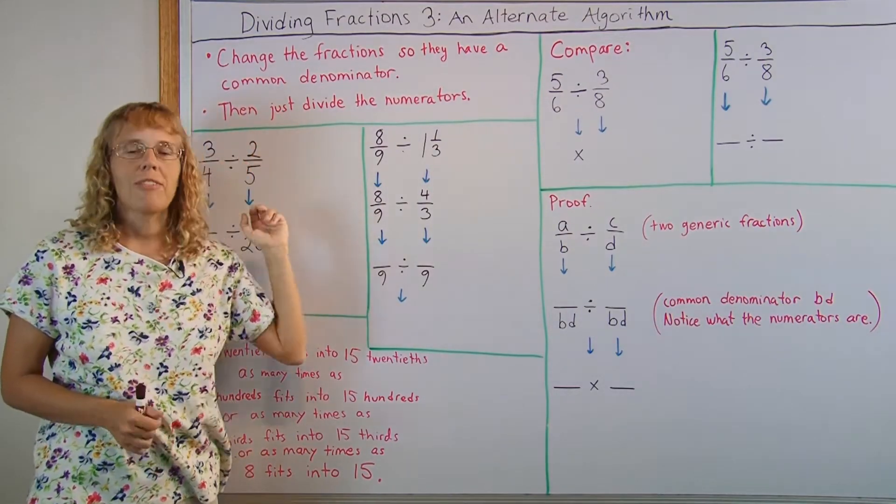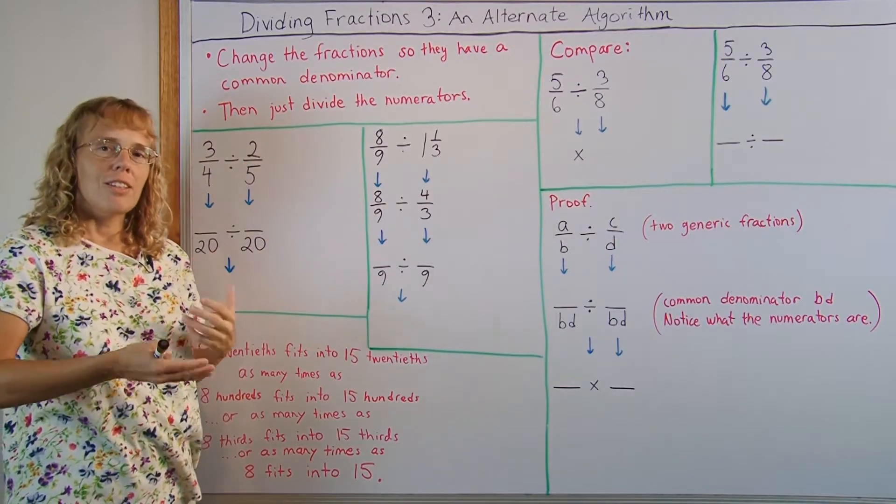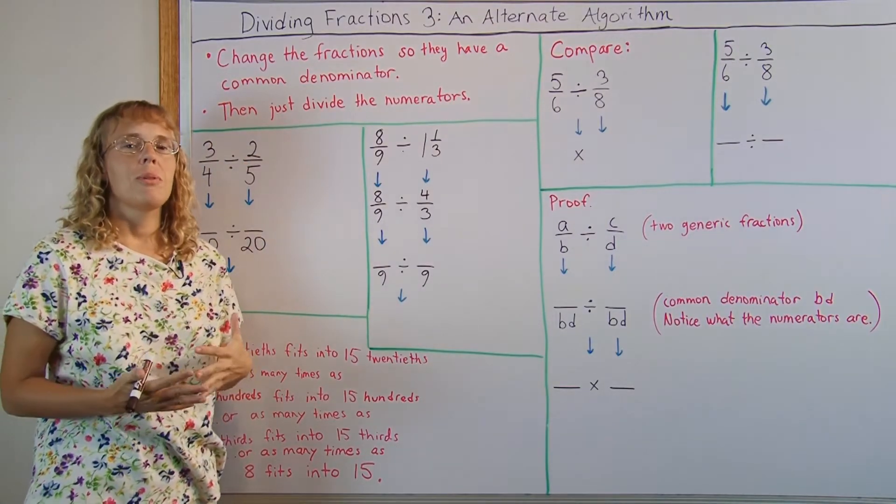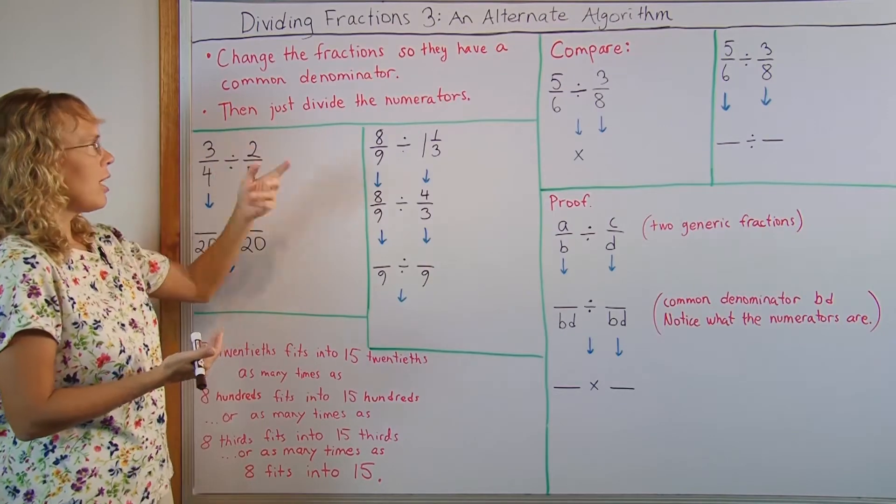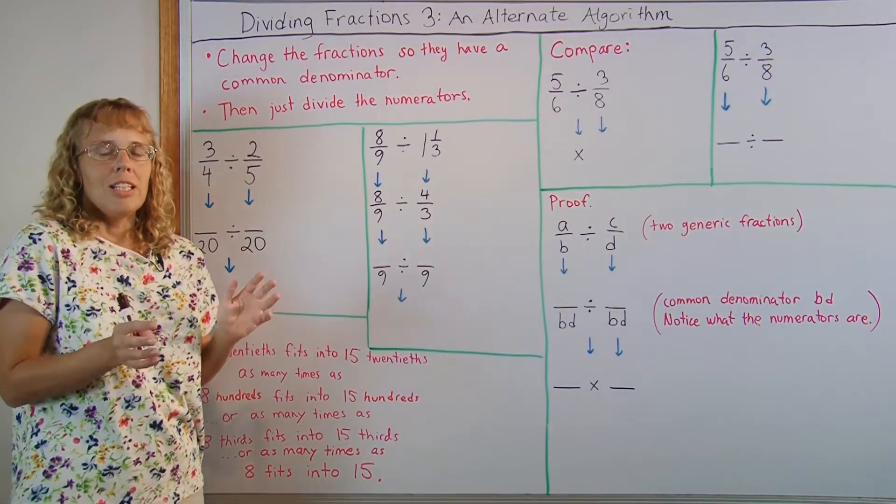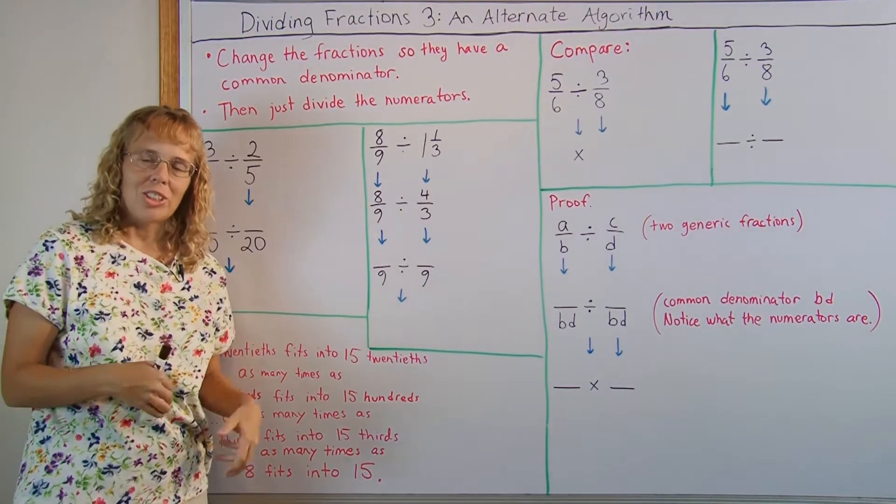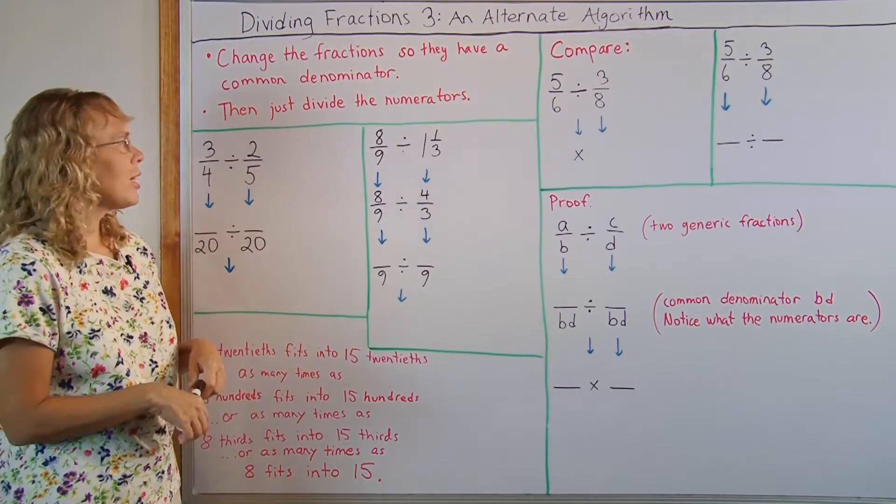And it goes like this. You change the fractions to be divided so that they have the same denominator, common denominator. And then you just divide the numerators. It becomes a whole number division. There's no more fractions. Let's look at an example.